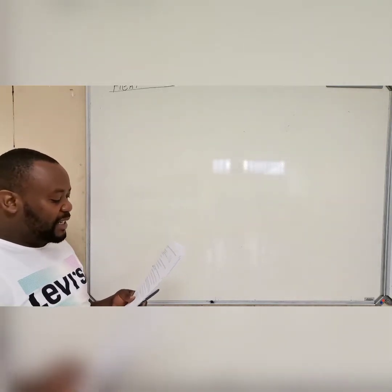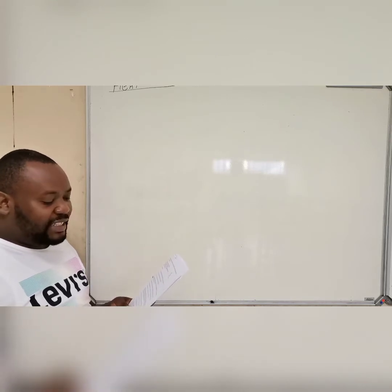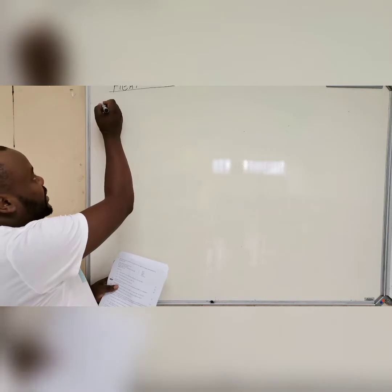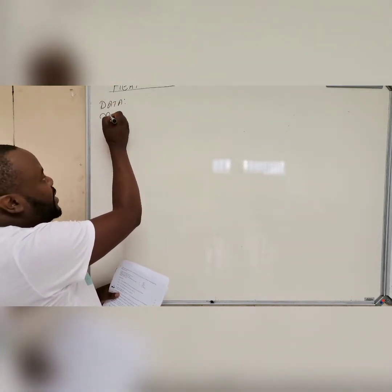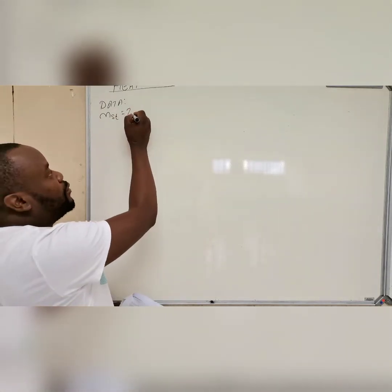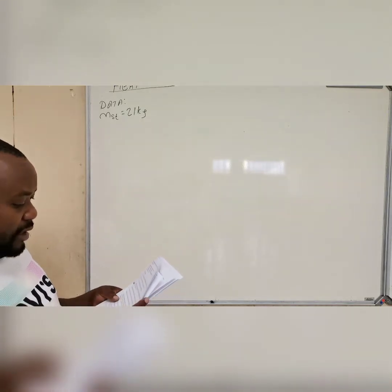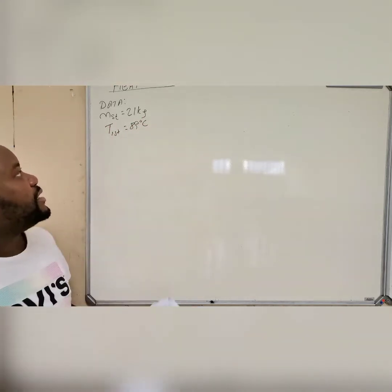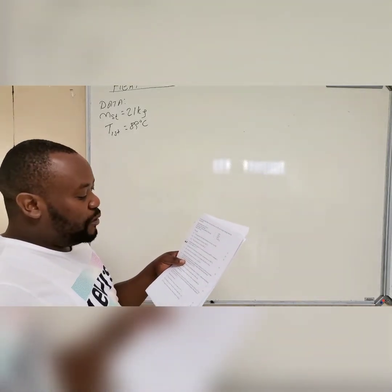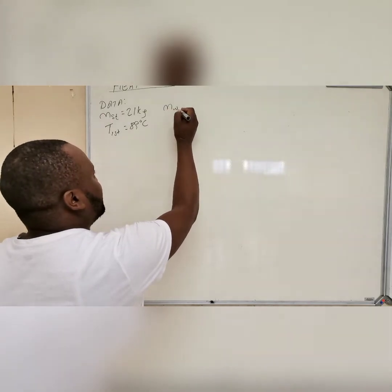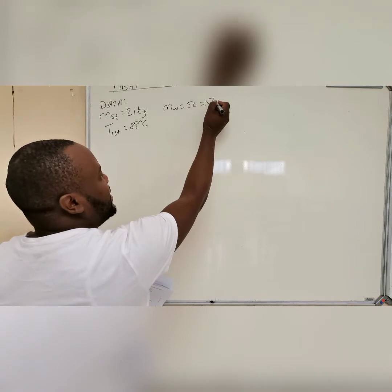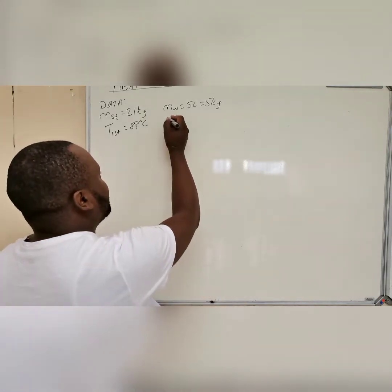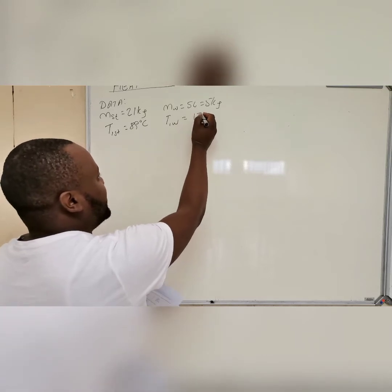I will read the question and write it at the same time. They say a piece of steel with a mass of 21 kg and an initial temperature of 89 degrees Celsius. And 5 litres of water — since it's water, 5 litres equals 5 kg — with an initial temperature of 15 degrees Celsius.